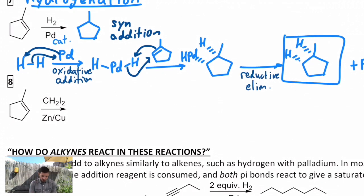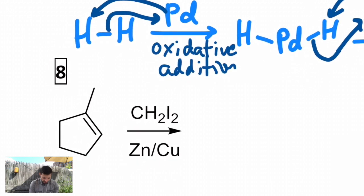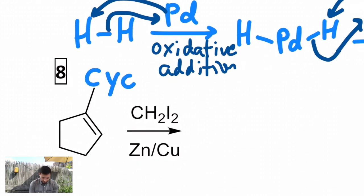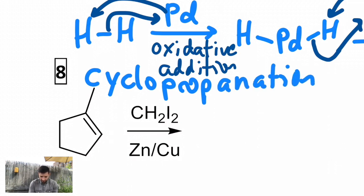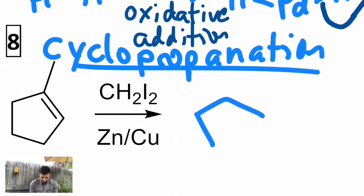The last addition we're going to look at is called cyclopropanation. This one's really specific but pretty useful if you want to make a cyclopropane. If I take methylcyclopentene and treat it with diiodomethane and zinc-copper amalgam, you get a new three-membered ring where the pi bond was. I've only added one carbon. This occurs with syn addition.